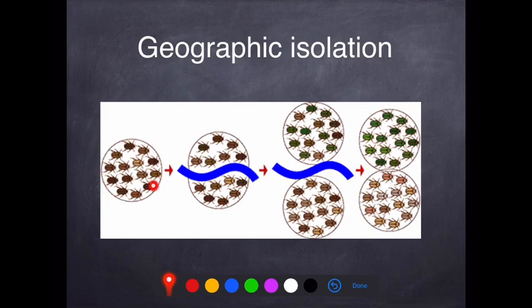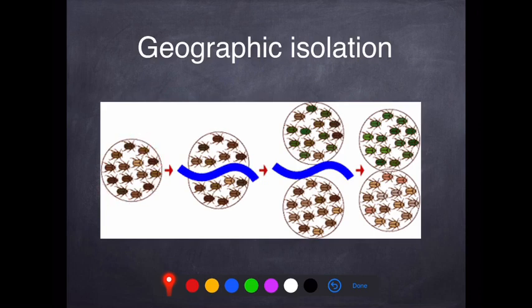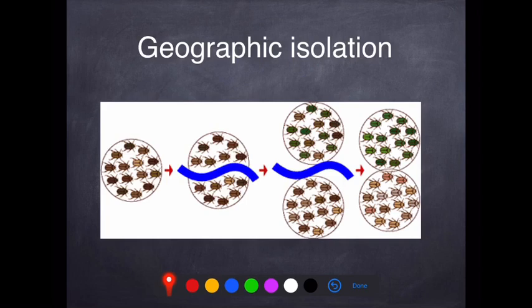Here we have a single population at the beginning. As you can see, there is variation from very pale through to quite dark and almost greenish in colour. Some kind of geographic change occurs in the environment — in this example, a river arrives. That could be because of a storm or landslide, changing the course of the river, and this original population is then divided into two populations. At this point they are still the same species, but they are two separate populations divided by a geographic barrier.